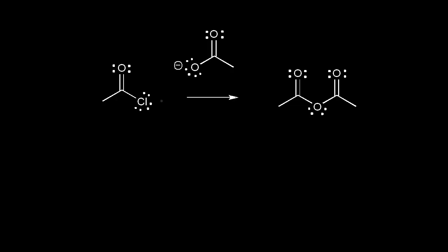Let's look at another organic chemistry mechanism, and we're going to start by identifying our nucleophile and our electrophile. For this compound, oxygen is more electronegative than carbon, so this oxygen is going to withdraw some electron density from this carbon. And this chlorine is going to do the same thing, because chlorine is more electronegative than carbon too. So this carbon is electron deficient — it is partially positive and can act as an electrophile. On the right, we have the acetate anion, which could come from sodium acetate. This oxygen has a negative one formal charge, so the oxygen is the nucleophilic center of our acetate anion, and our acetate anion can act as a nucleophile.